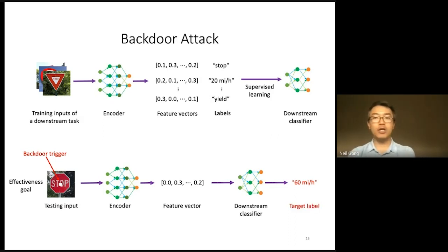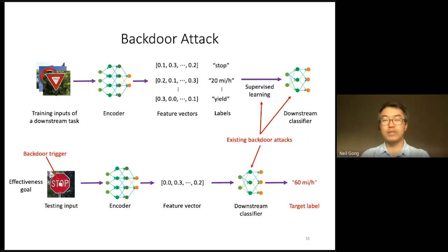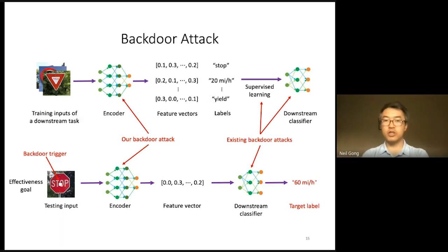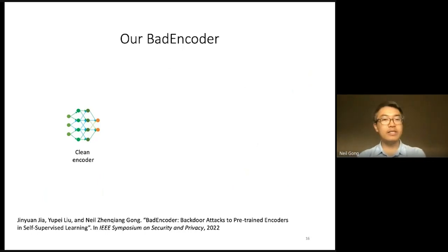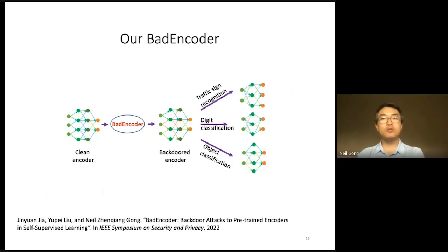Existing backdoor attacks, when applied to self-supervised learning, aim to compromise the downstream classifiers to achieve these two goals. However, these backdoor attacks are not applicable when the process of building a downstream classifier maintains integrity. Our backdoor attack aims to compromise the encoder to achieve these two goals. Specifically, given a clean encoder, our backdoor attack — called BadEncoder — transforms it into a backdoor encoder. And when building downstream classifiers based on our backdoor encoder, these downstream classifiers inherit the backdoor behavior simultaneously.